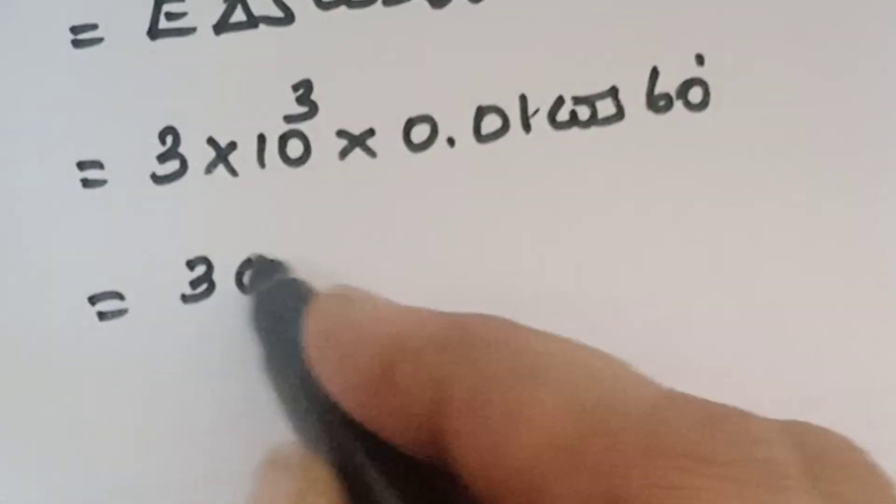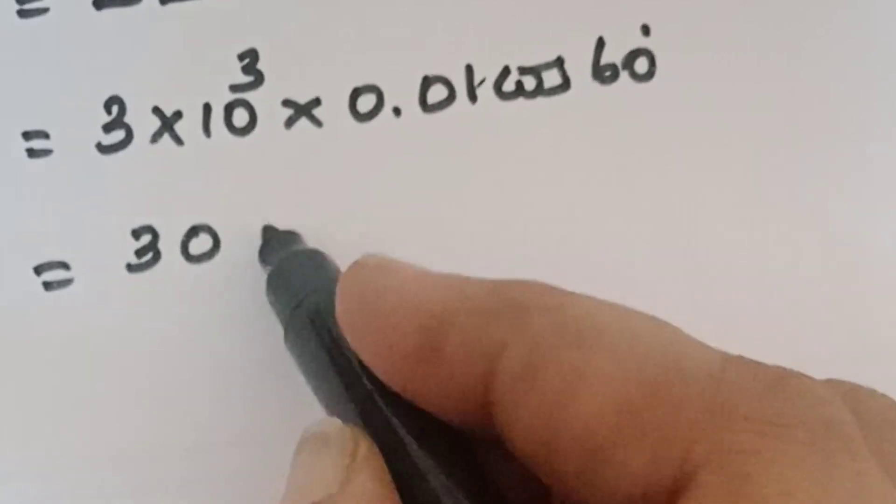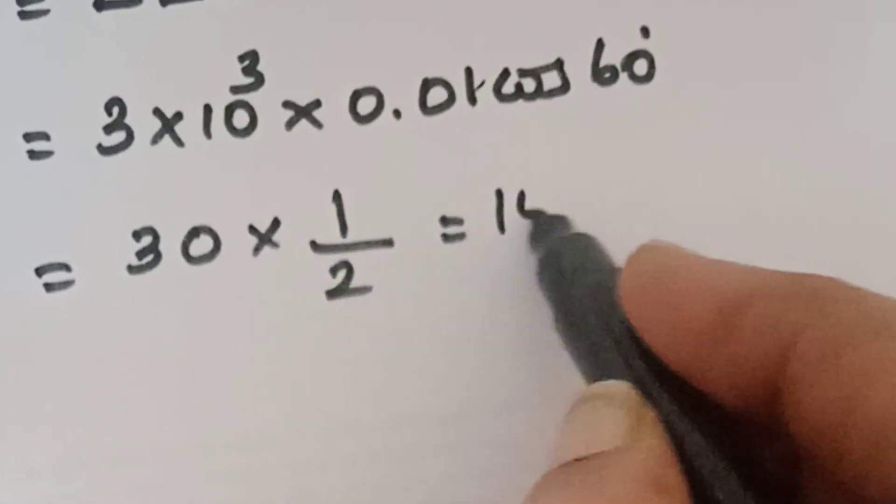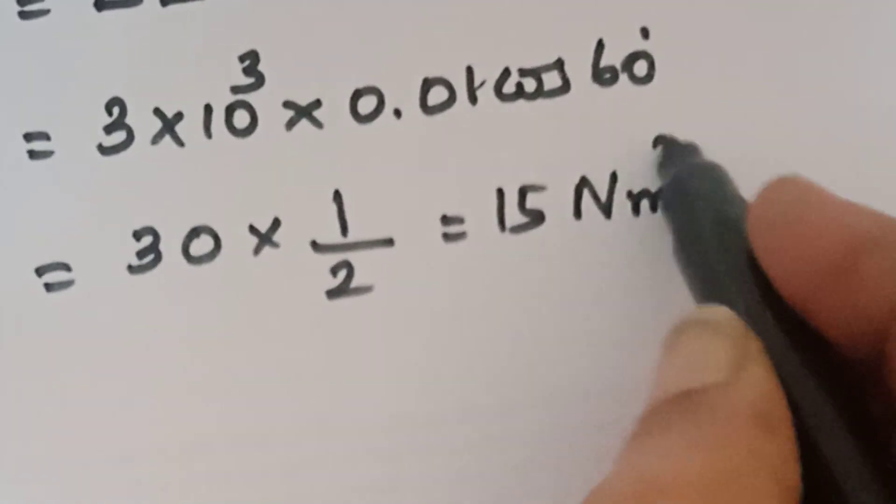Therefore 30 into 1 by 2. Therefore 30 into 1 by 2. 15 newton meter square per coulomb.